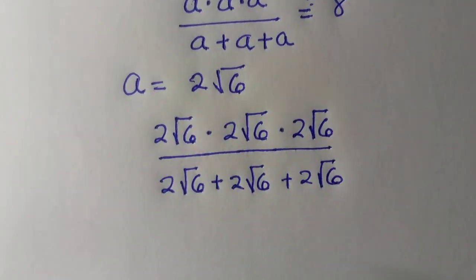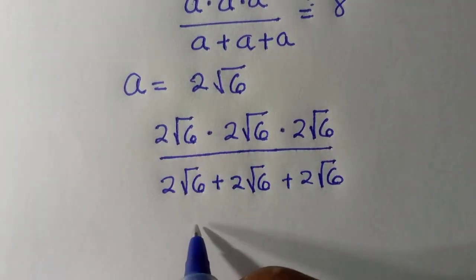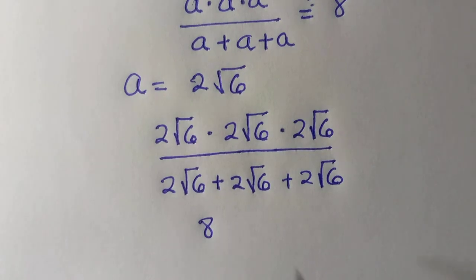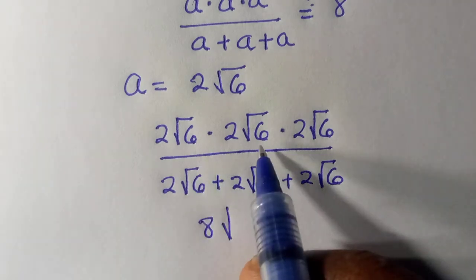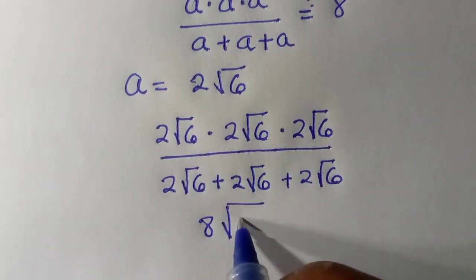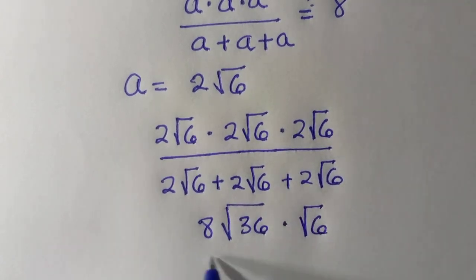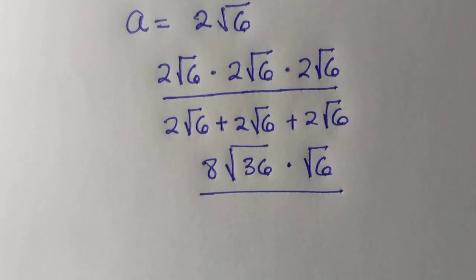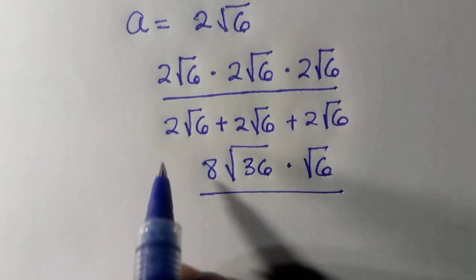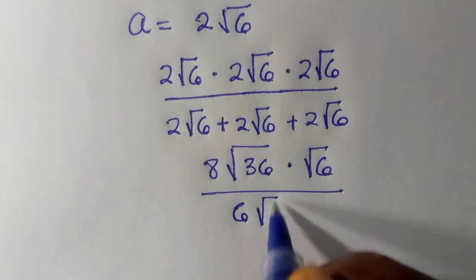So having this, we multiply 2 by 2 by 2, that gives us 8. Then we also multiply the whole of this together, which is root 6 times root 6 first. That gives us root 36, then multiply by root 6 divided by, by adding the whole of this together. Since we have the same root, we add the coefficient together, which is 6 root 6.